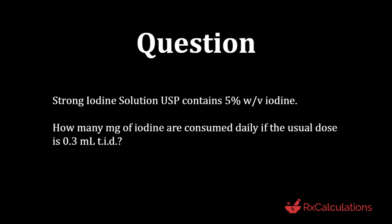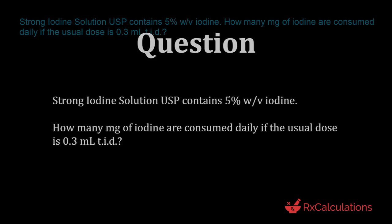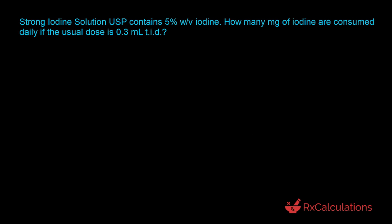Let's take a look at the next question. Strong iodine solution USP contains five percent weight by volume iodine. How many milligrams of iodine are consumed daily if the usual dose is 0.3 milliliters three times a day? The way we want to approach this question is to take the percentage concentration, set up a proportion using the total volume the patient consumes in one day, determine the amount in grams, and then convert that to milligrams. The first thing is to determine how much volume of iodine solution the patient takes in one day.